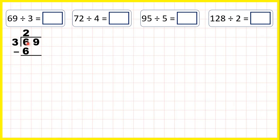Now normally we subtract, so 6 minus 6 is 0, so we don't need to write anything, but the next step is to bring down the next digit.